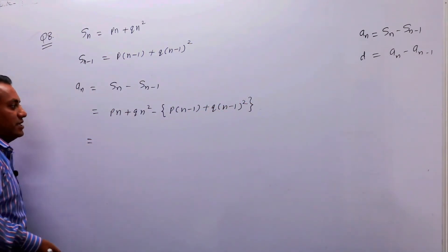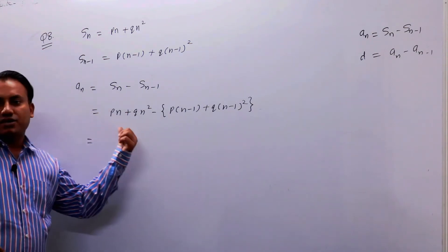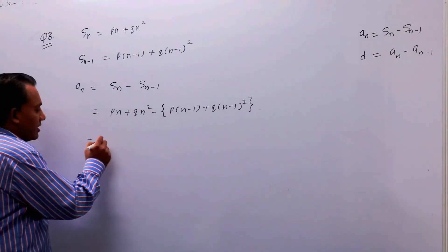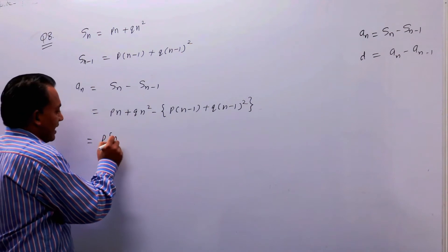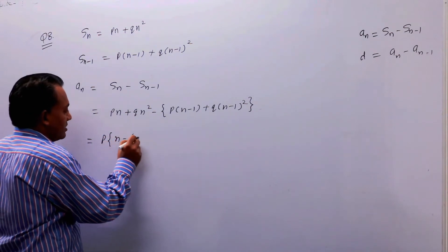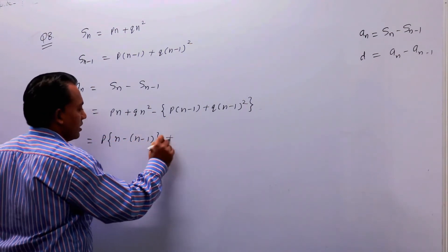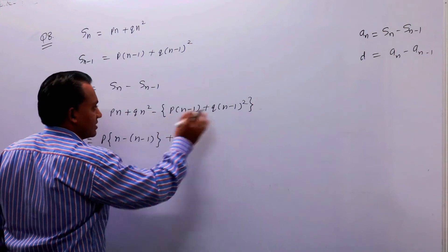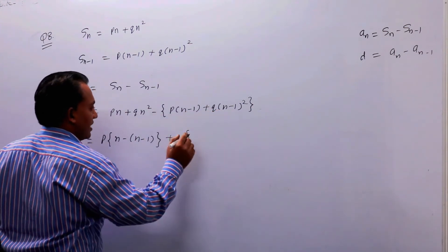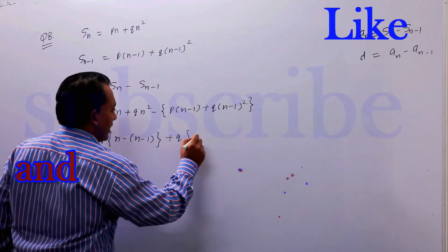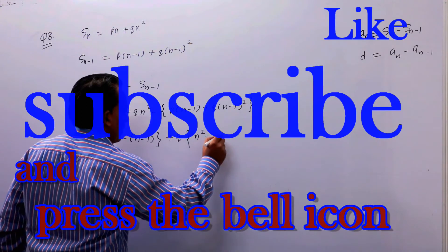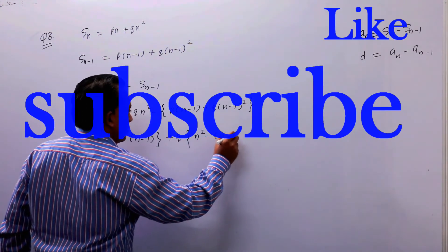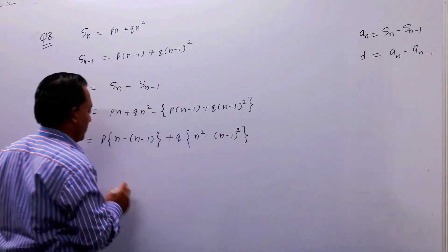अब ऐसे solve करते हैं बच्चों — P को अलग solve करेंगे और Q को अलग। P common करेंगे तो बचेगा n minus (n-1)। और Q common कर लेंगे यहां से, तो minus or plus — minus हो जाएगा — n² और (n-1) whole square।